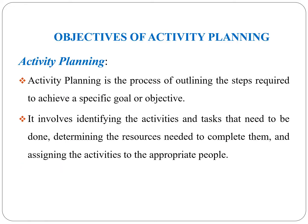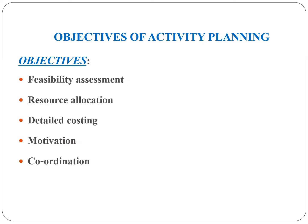First, we discuss about the concept of Objectives of Activity Planning. So, what is Activity Planning? Activity Planning is said to be the process of outlining the steps required to achieve a specific goal or objective. It involves identifying specific activities and tasks that need to be done, determining the resources that are needed to complete them, and assigning each and every activity to the appropriate people.